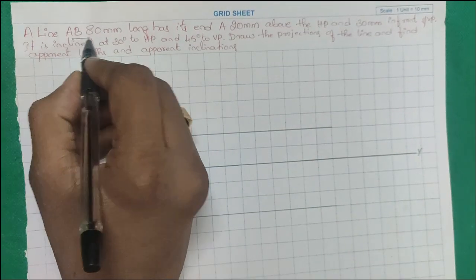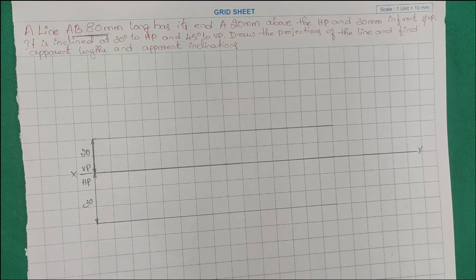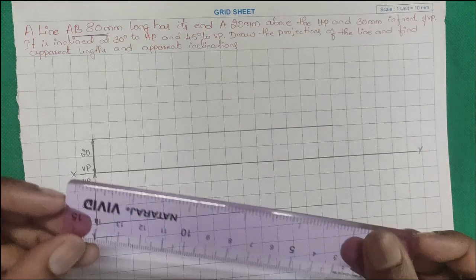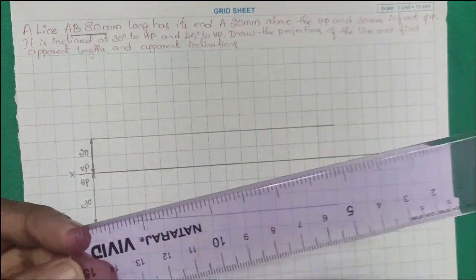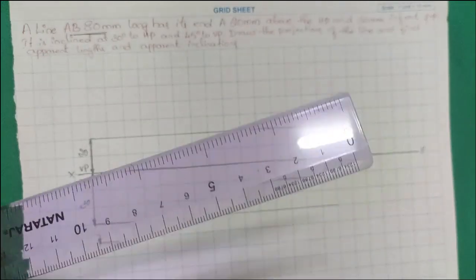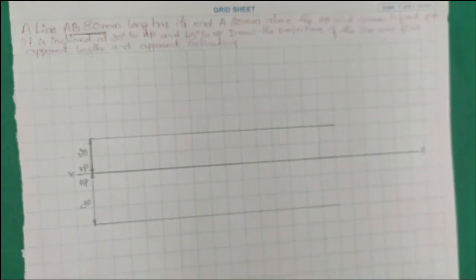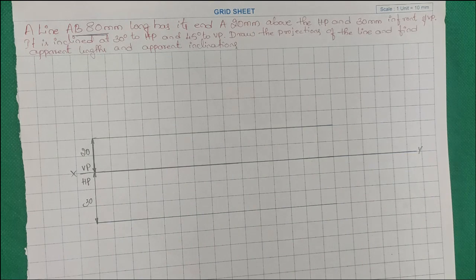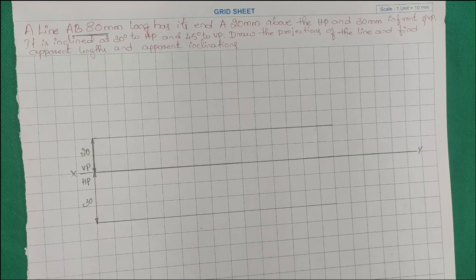The true length here is 80 mm. Considering this as a line, it has two endpoints. End A is 20 mm above HP, meaning point A is above the XY line. It is 30 mm in front of VP, meaning 30 mm below the XY line. The inclination given is 30 degrees to HP and 45 degrees to VP.